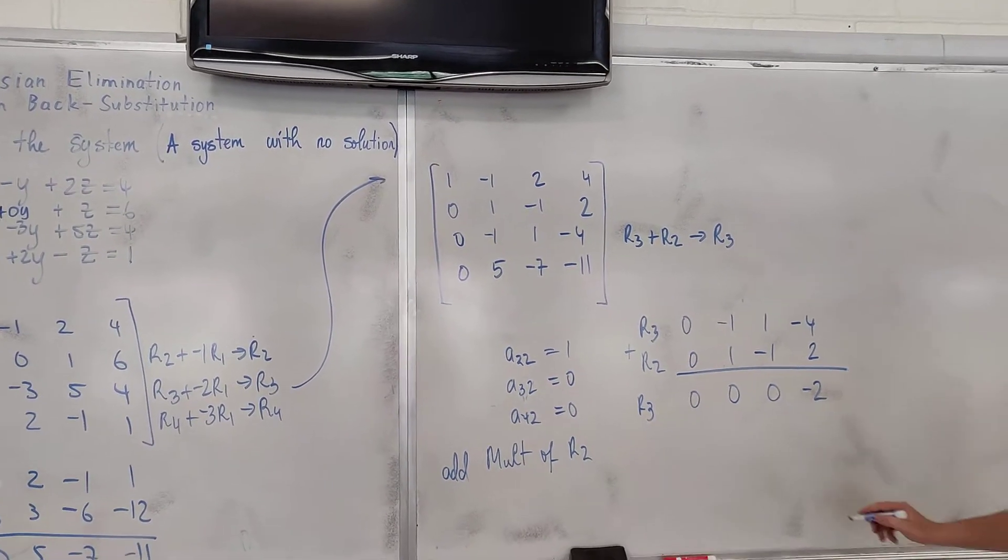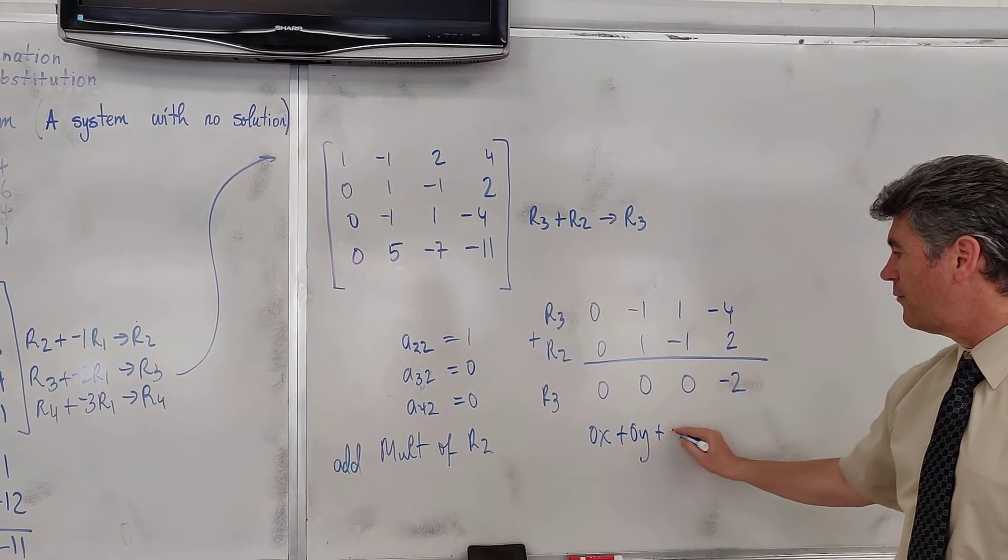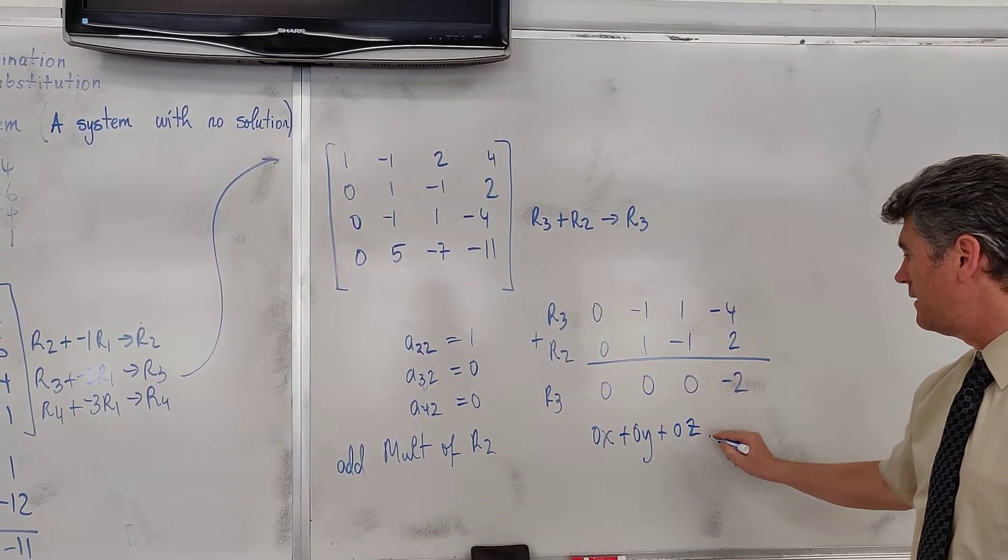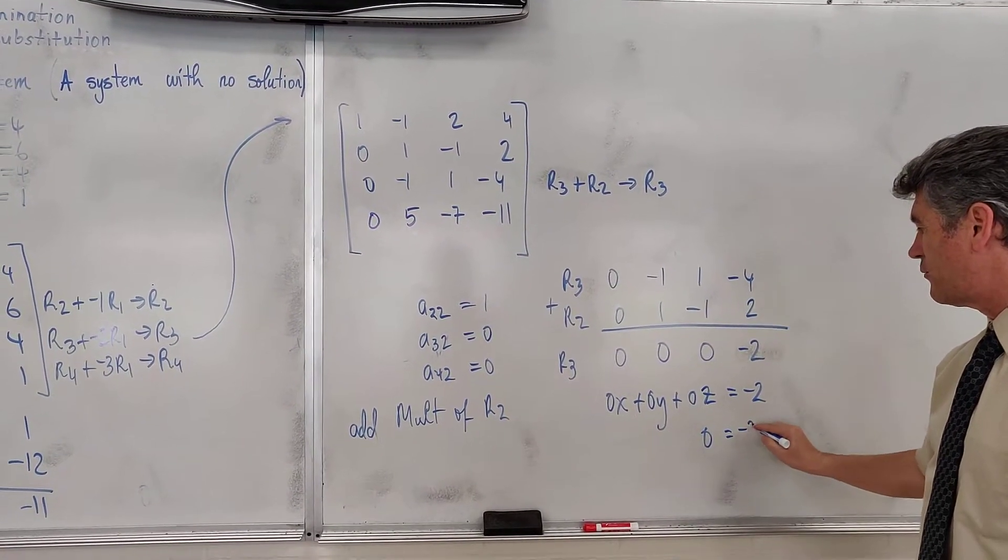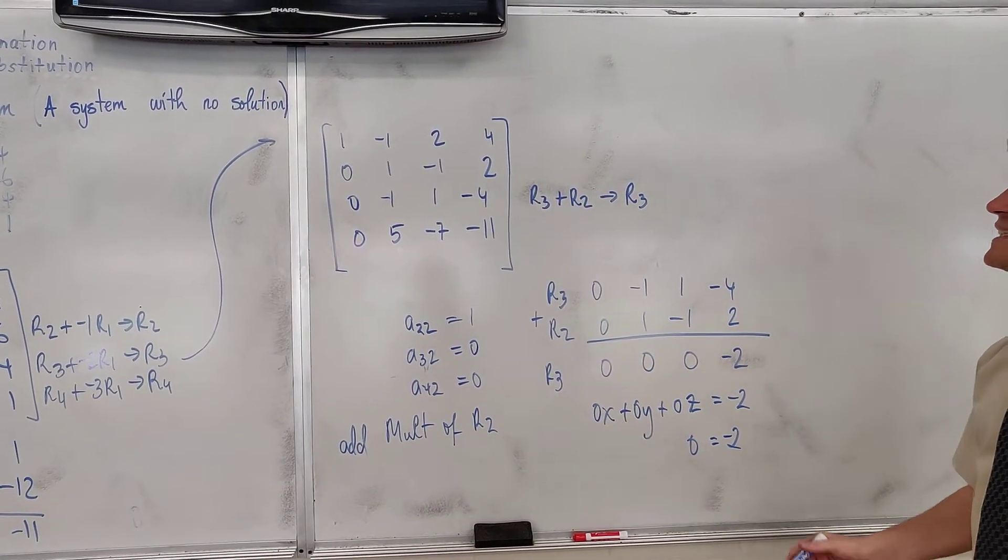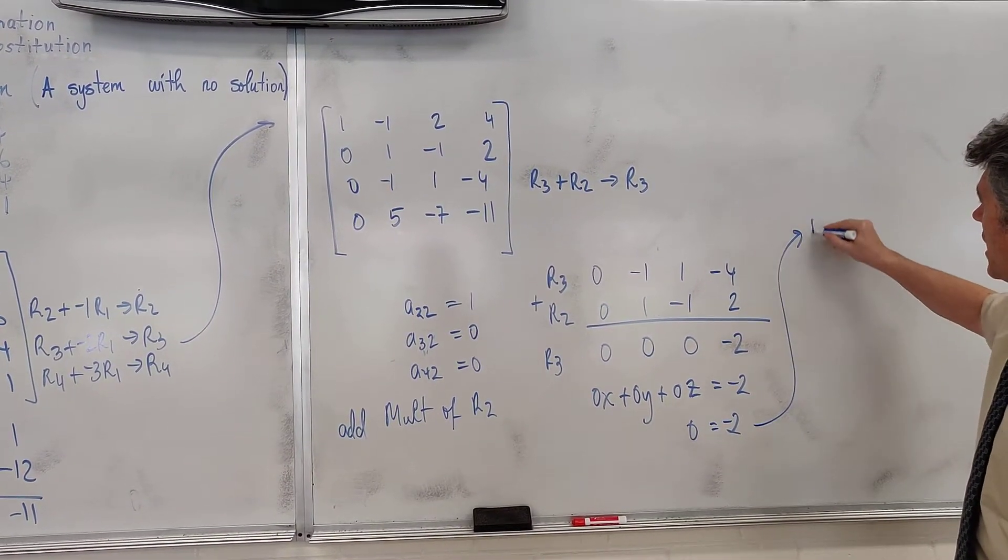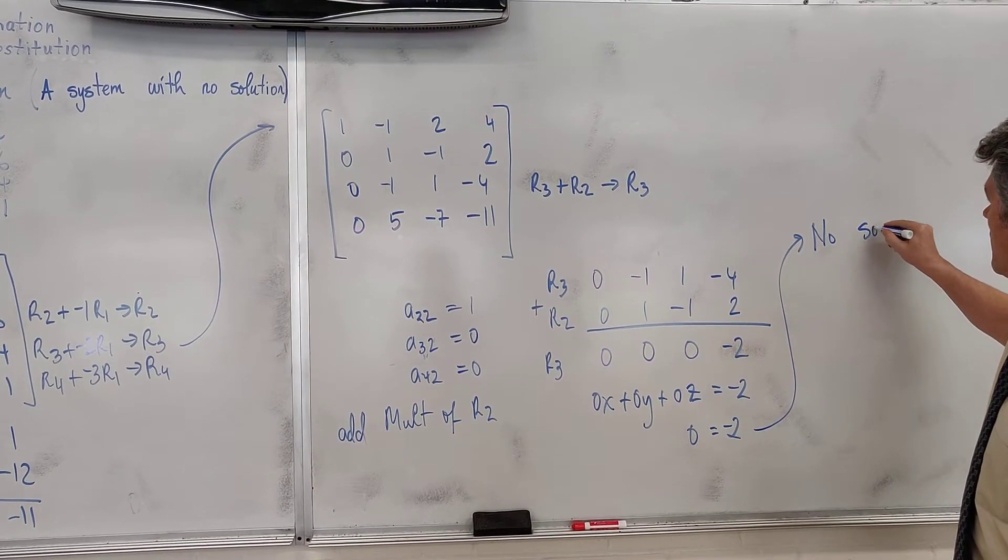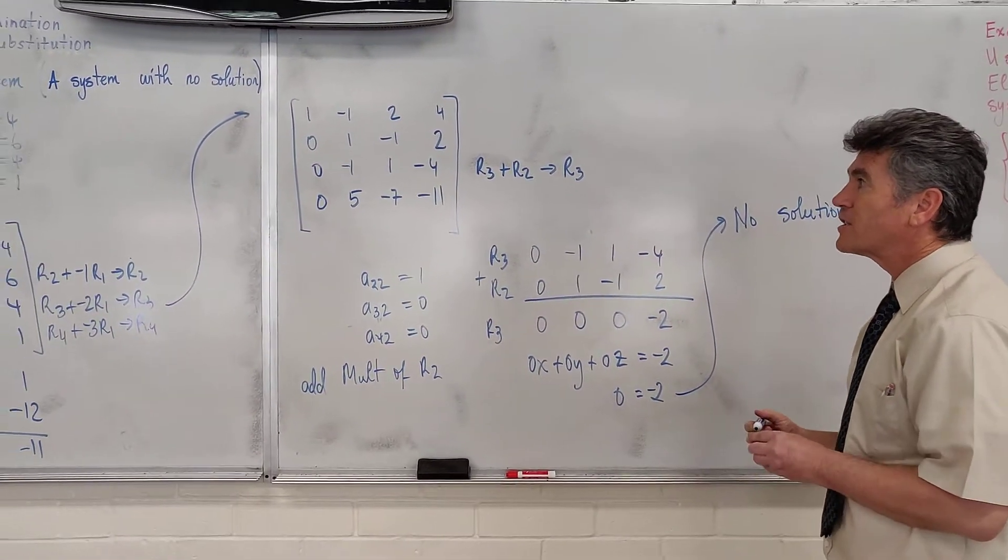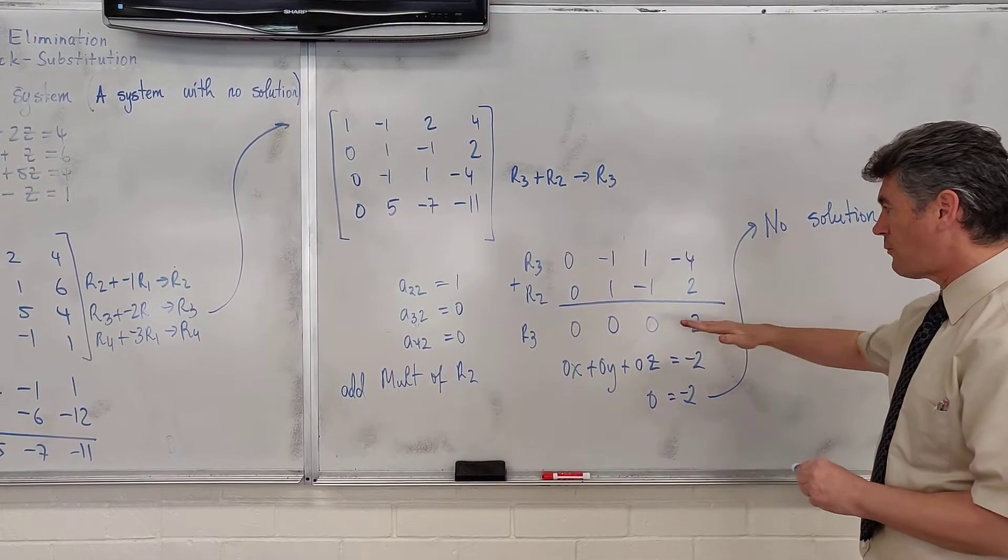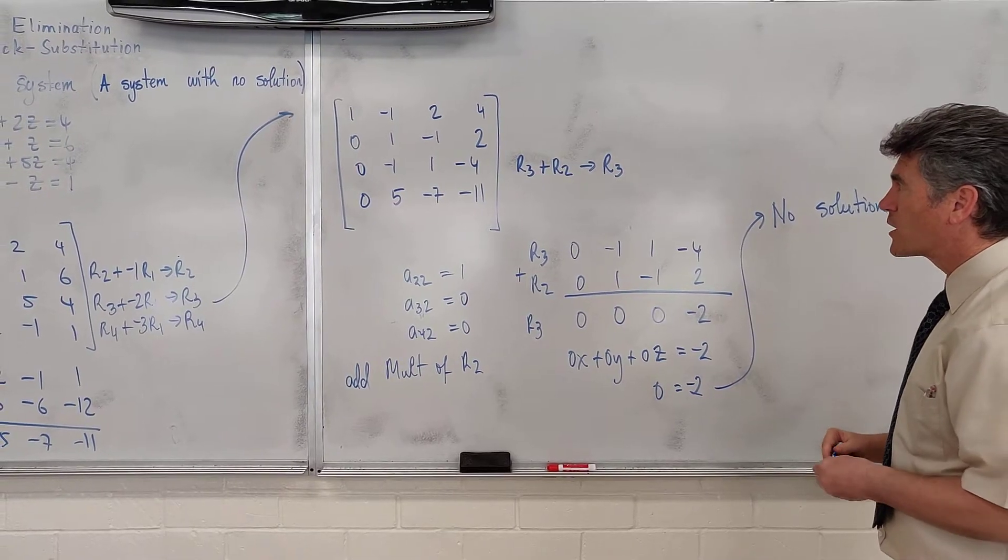Why do we run into a problem? Because we have 0x plus 0y plus 0z is equal to negative 2. In other words, 0 is equal to negative 2. When this happens, then the conclusion is no solution. And there is nothing more that you want to do. So you stop right here, you say the system has no solution, and you are done.